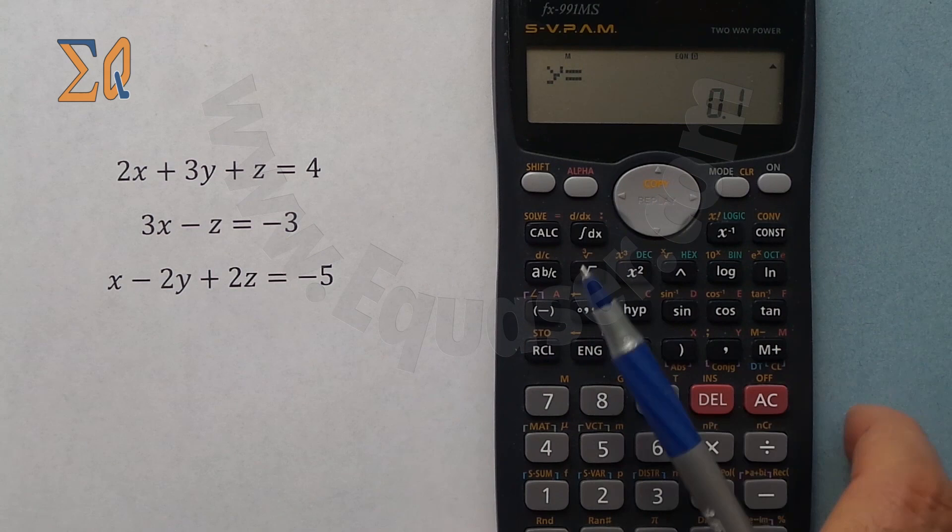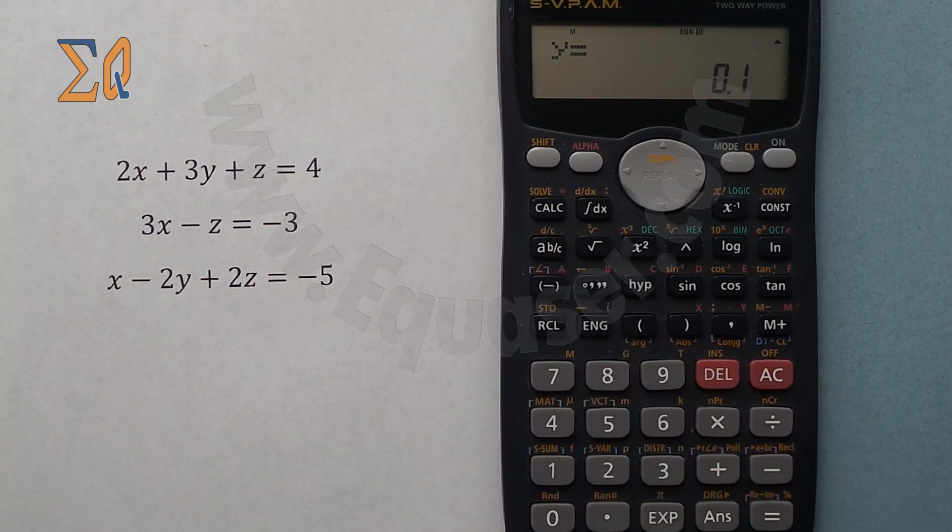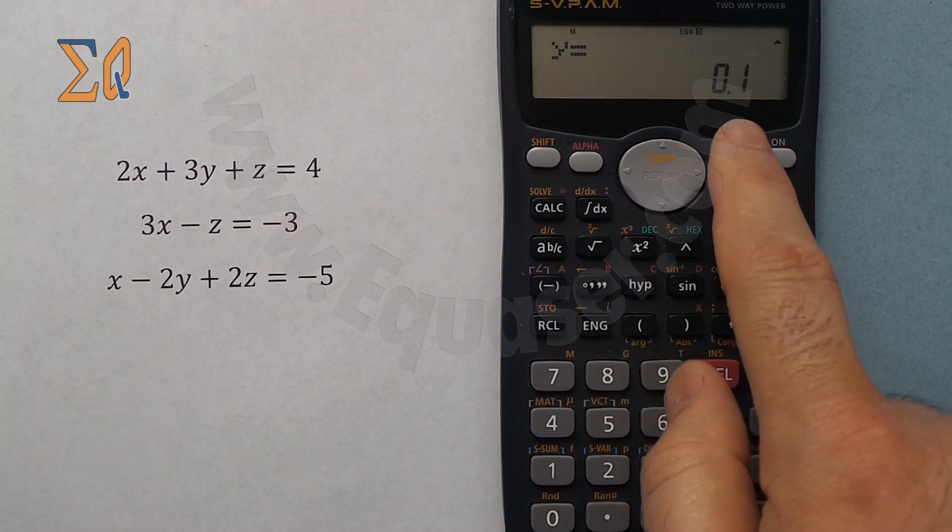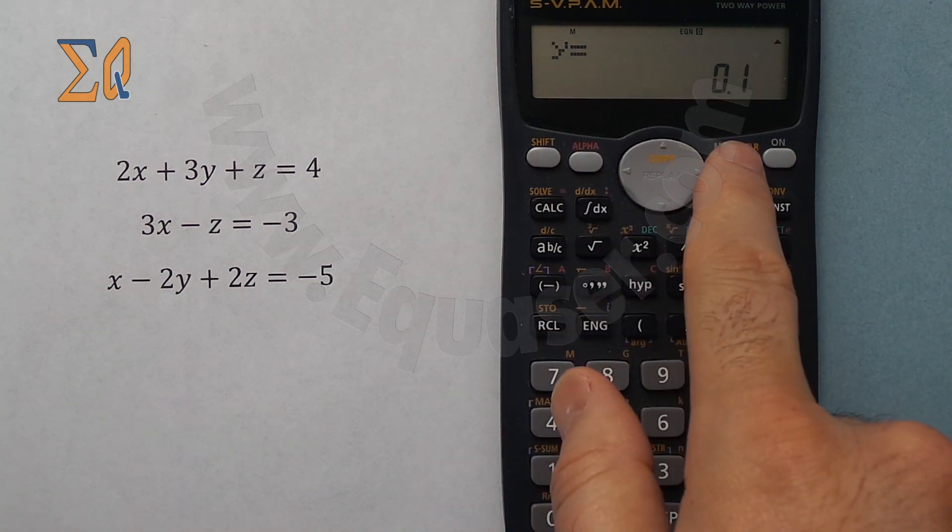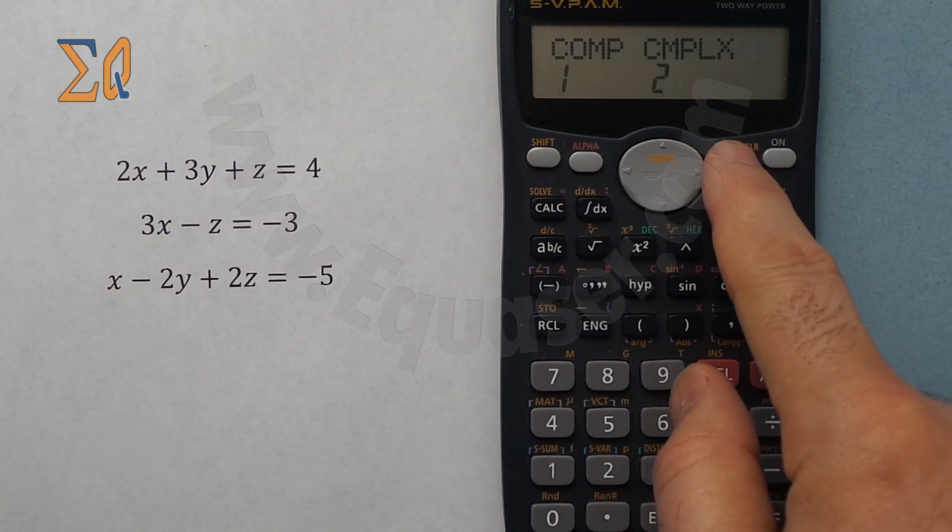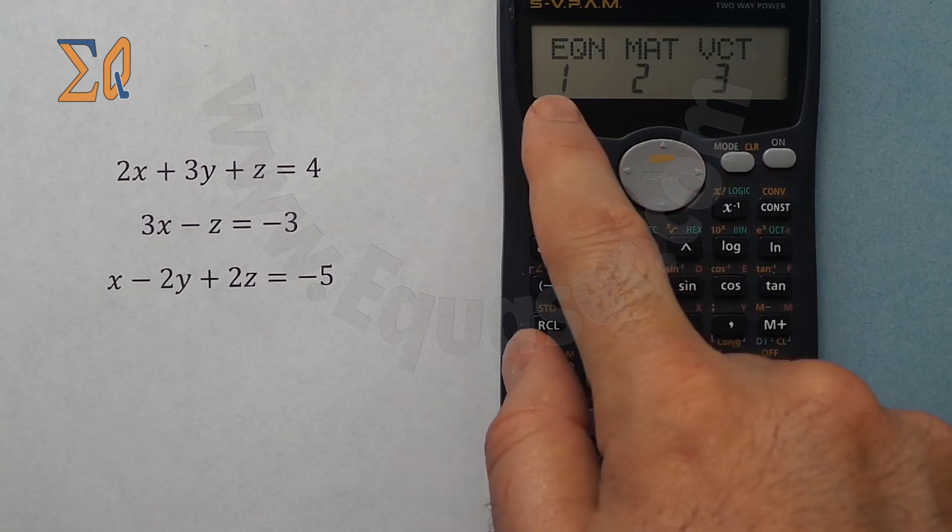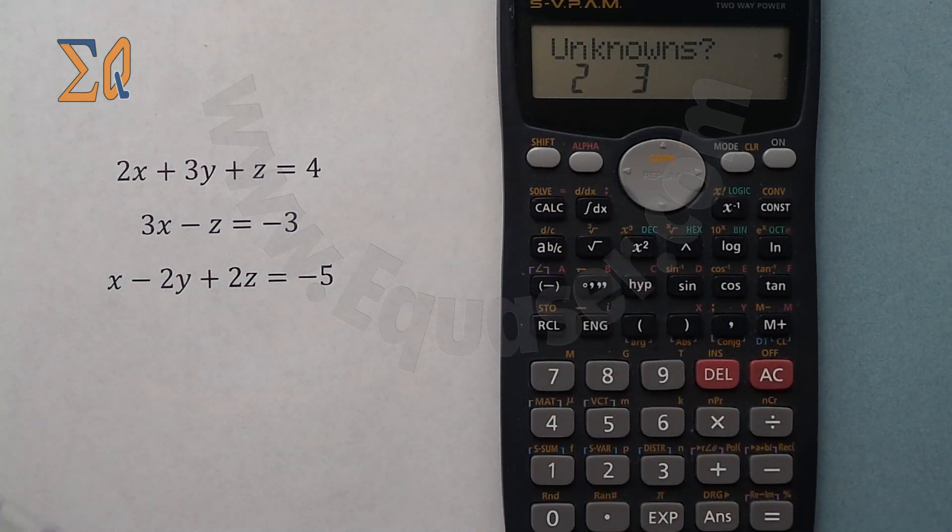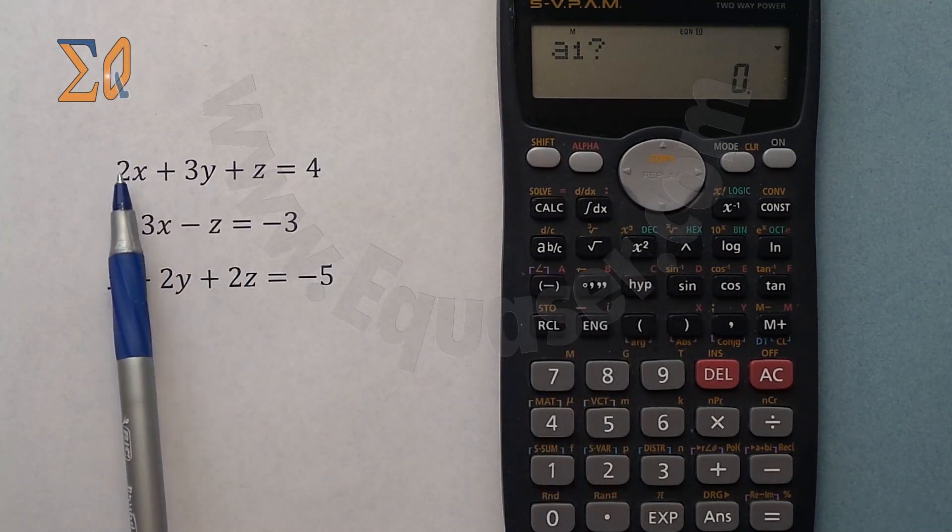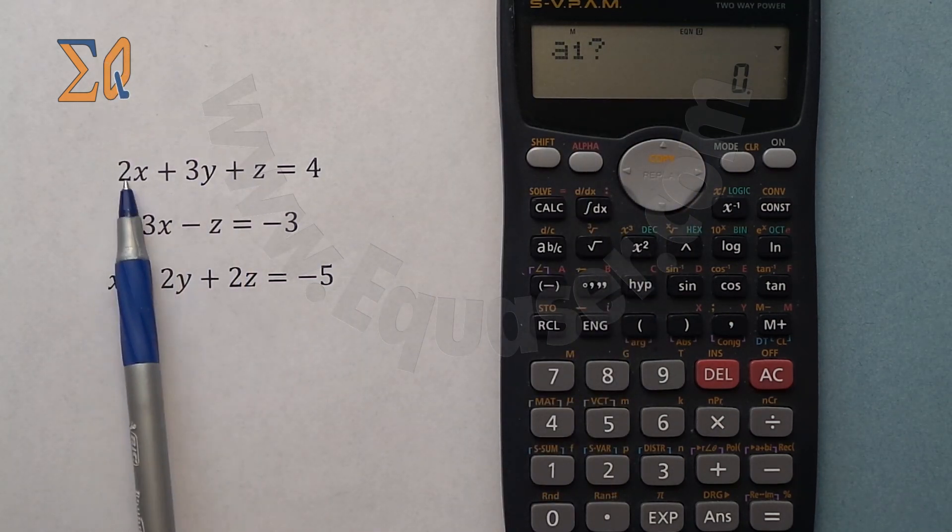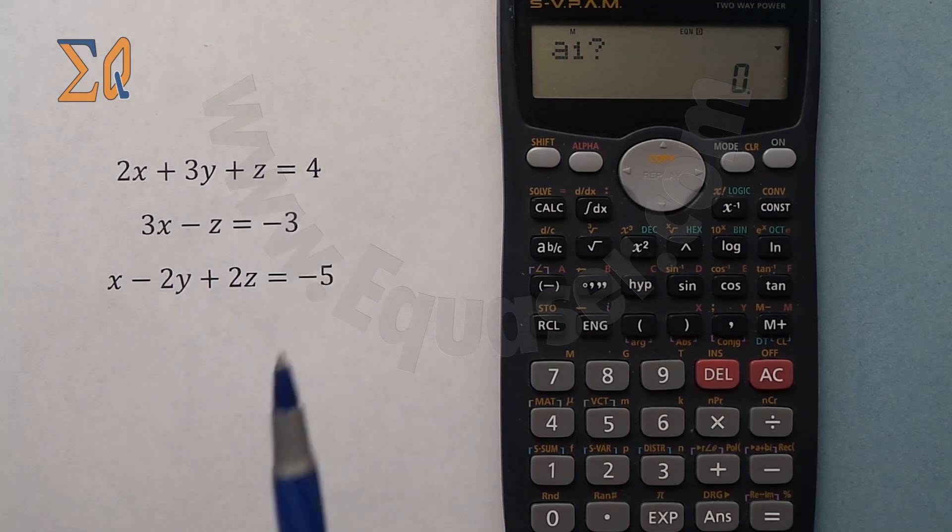Let's do a system of equations with three equations with three variables. In order to do that I press mode once, twice, and then three times for equation. Now I press 3 which is three unknowns. The same thing, this is a1, a2, a1, b1, c1, and then d1.